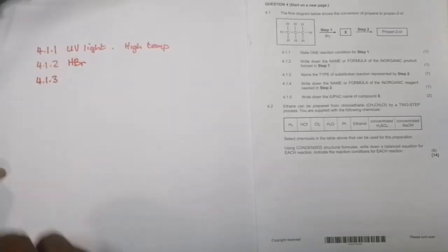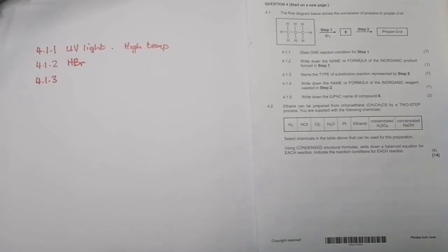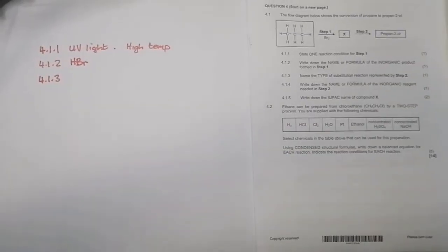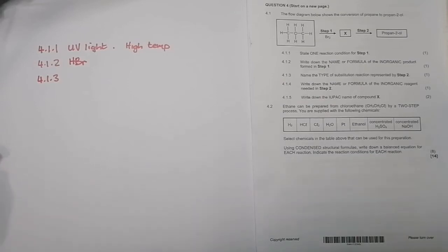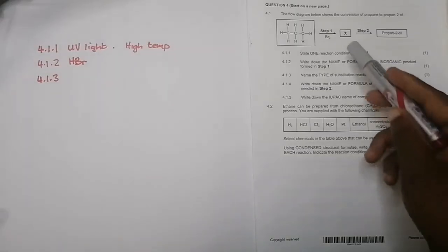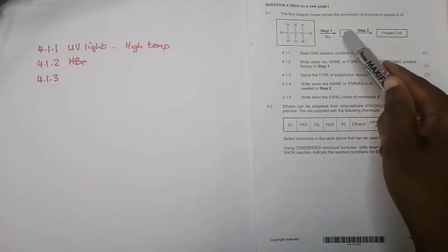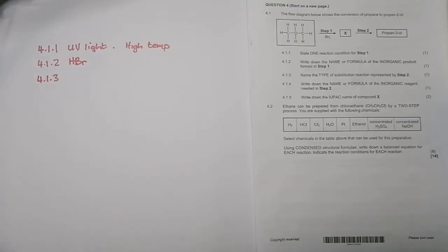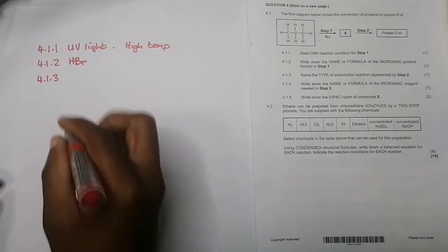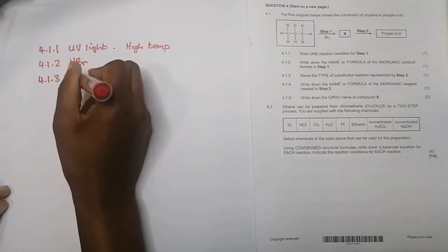Next question - and of course if you don't understand what we're talking about, it means you haven't watched our videos on organic chemistry. Please just do yourself a huge favor and go and watch that video. It will really help you quite a lot. Now, the next question they say name the type of substitution reaction represented by step two. So now you've got hydrogen bromide there, and you are now removing the bromide and replacing it with an OH. We call that type of substitution reaction hydrolysis.